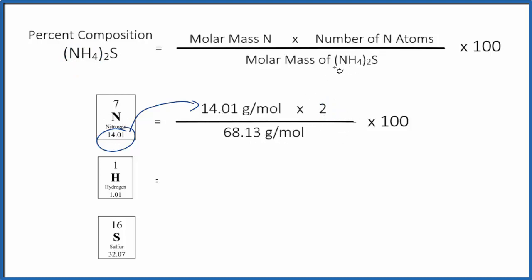Then we'll divide the whole thing by the molar mass of NH₄₂S. If you need help calculating that, there's a link at the end of this video. So we have 68.13 grams per mole on the bottom. Because we have grams per mole on top and bottom, we can cancel those out. We'll multiply 14.01 times 2, get that number, divide by 68.13, then multiply by 100 to get a percent, which is 41.13%. That's the percent composition of nitrogen in ammonium sulfide.